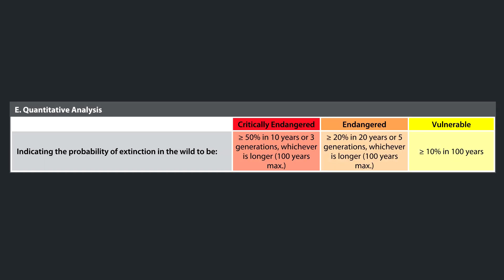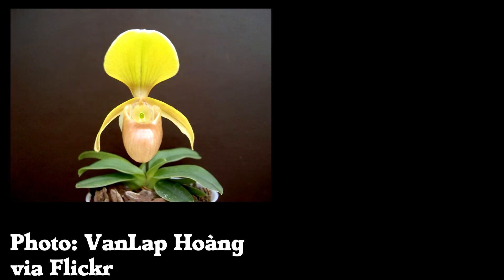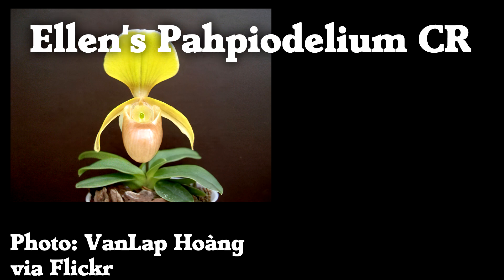Finally, Criteria E is the quantitative analysis. If the quantitative analysis suggests there is a 50% or greater probability that the species will go extinct in 10 years or 3 generations, whichever is longer, then that population would be listed as critically endangered. I could not find a single species actually assessed under Criteria E, but I did find this orchid — Ellen's Paphiopedilum — which probably has the most reasons for being critically endangered out of any species in the world.